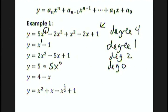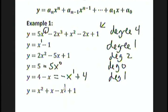y equals 4 minus x is another degree 1 polynomial. Be careful — if you want to know the degree, it might be helpful to rewrite the function in descending order of exponents. So 4 minus x is the same as negative x to the 1 plus 4. Lastly, y equals x squared plus x minus x to the one-half plus 1 is not a polynomial at all. Polynomials cannot have fractional or negative exponents.